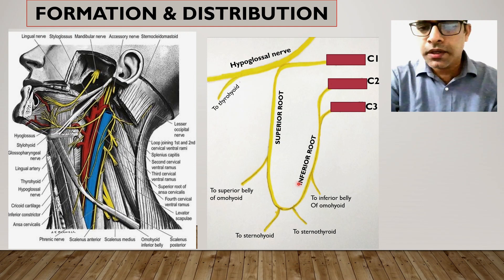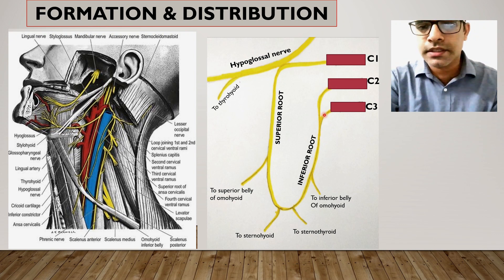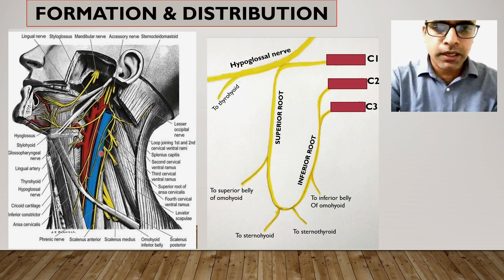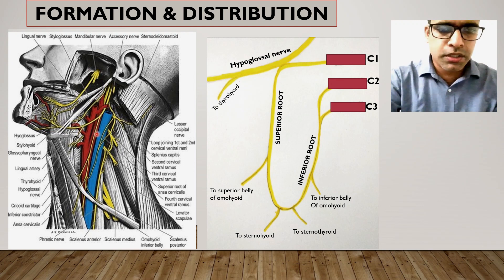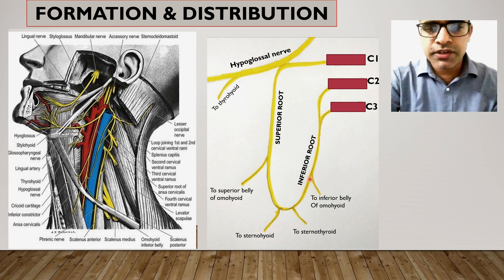The inferior root is below, contributed by nerve fibers from C2 and C3 — the second and third cervical spinal segments. The fibers from C2 join with fibers from C3 to form the inferior root. The inferior root runs antero-inferiorly, winds around the internal jugular vein, and then, antero-inferior to the internal jugular vein, joins with the superior root to form the hairpin-course ansa cervicalis.